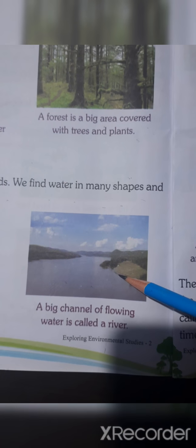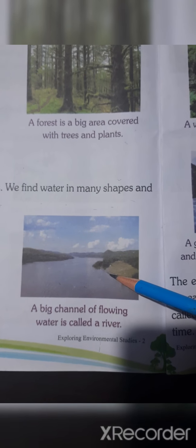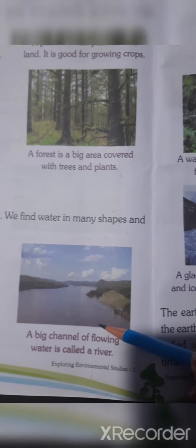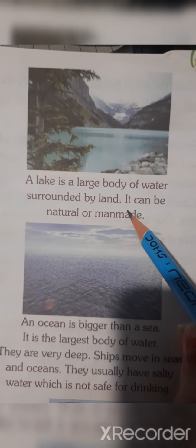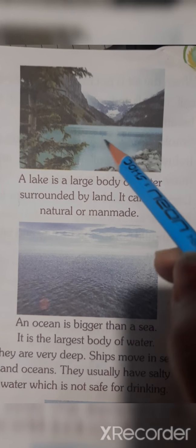A big channel of flowing water is called a river. A sea is a large body of water. A lake is also a large body of water — it is surrounded by land and can be natural or manmade.